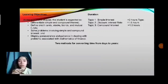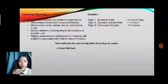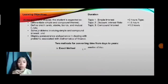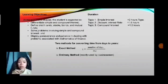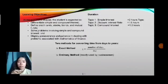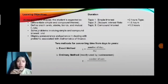We have two methods for converting time from days to years. First is the exact method, where T equals number of days divided by 365. The second is the ordinary method, which is mostly used by businessmen, where T equals number of days divided by 360.